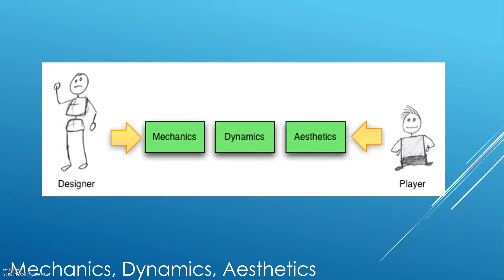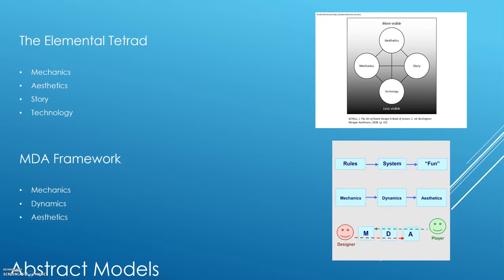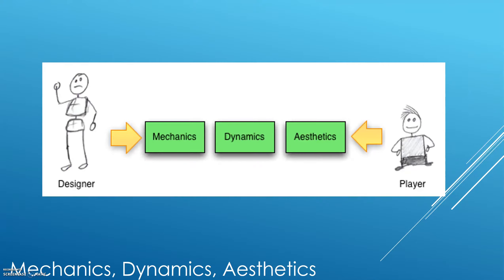The MDA framework states that you as a designer create the rules or the mechanics of the game. The player starts at the other end of the spectrum — they see the aesthetics, which in this context means the emotion they're feeling when playing the game, the fun they're getting out of it. This is different from the Elemental Tetrad, where aesthetics means the audio and the visual. Same word, but it has a different meaning in the MDA framework.